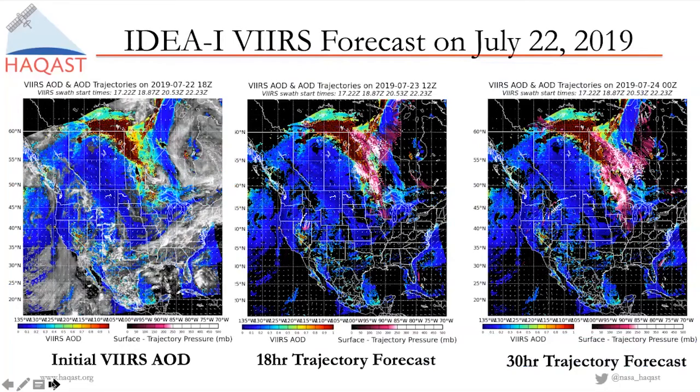Here's an example of an IDEA-I VIIRS forecast on July 22nd of last summer. On the left-hand side, you can see the initial VIIRS aerosol optical depth with very high values, well above one, over the northern provinces of Canada, and a plume transporting down over the Great Lakes region with enhanced aerosol optical depth over northern Minnesota. The middle panel shows an 18-hour trajectory forecast, and the 30-hour forecast shows that high aerosol optical depth should be moving over Wisconsin and down into central Illinois by the evening of the 23rd.